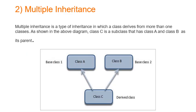Multiple inheritance: in this type, a class is derived from more than one class. In the figure, class A and class B are two base classes, and both are inherited by one class, that is class C. It is called multiple inheritance — more than one class is inherited by a derived class.